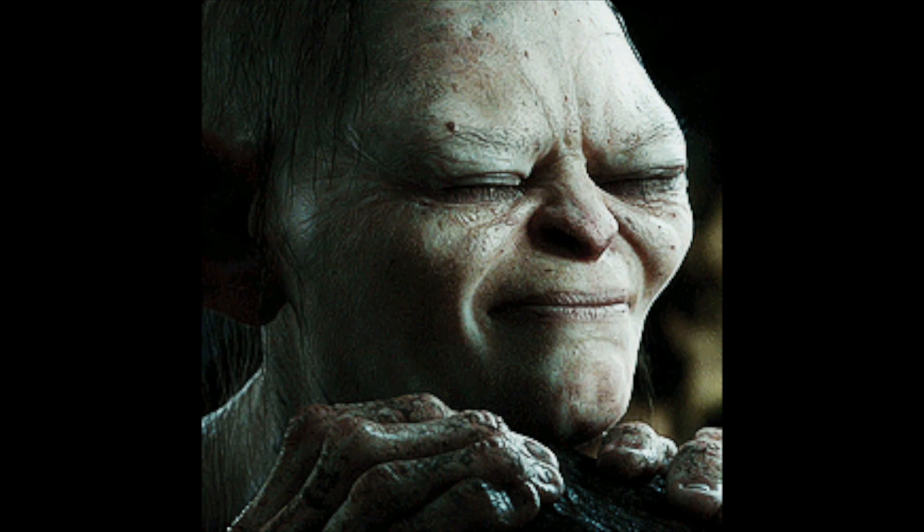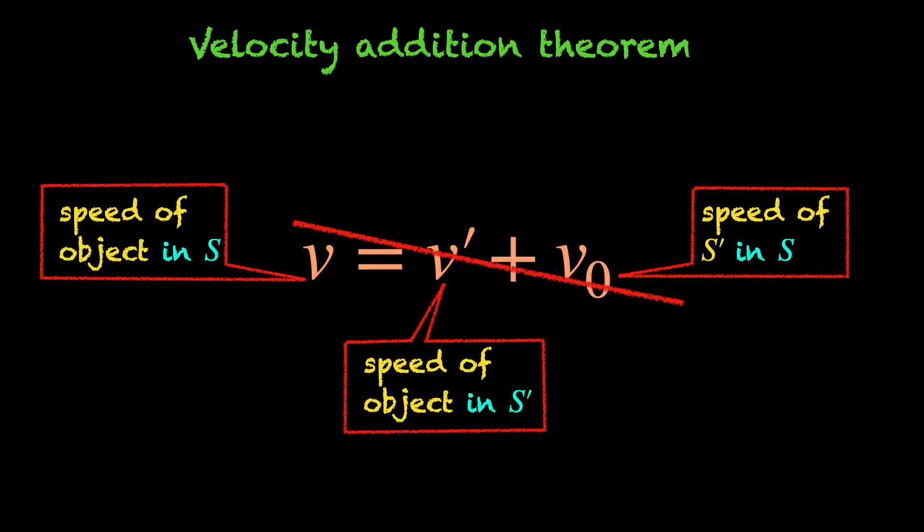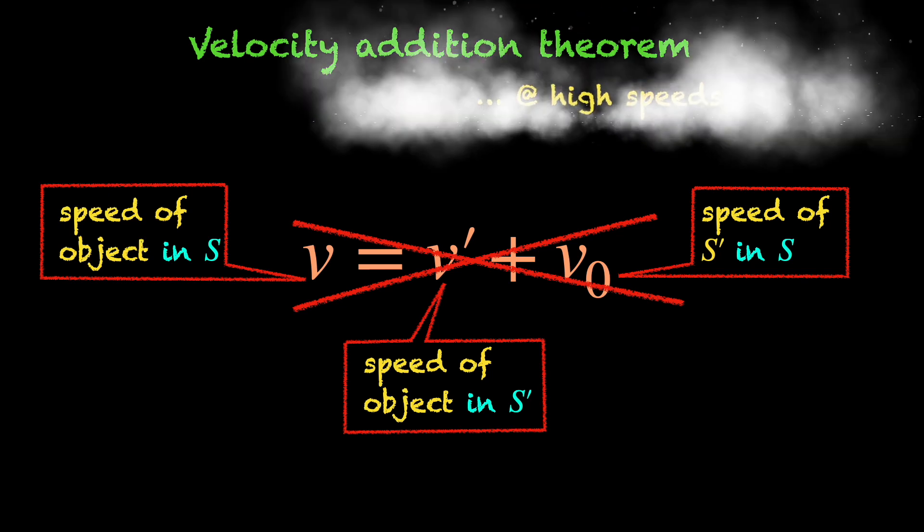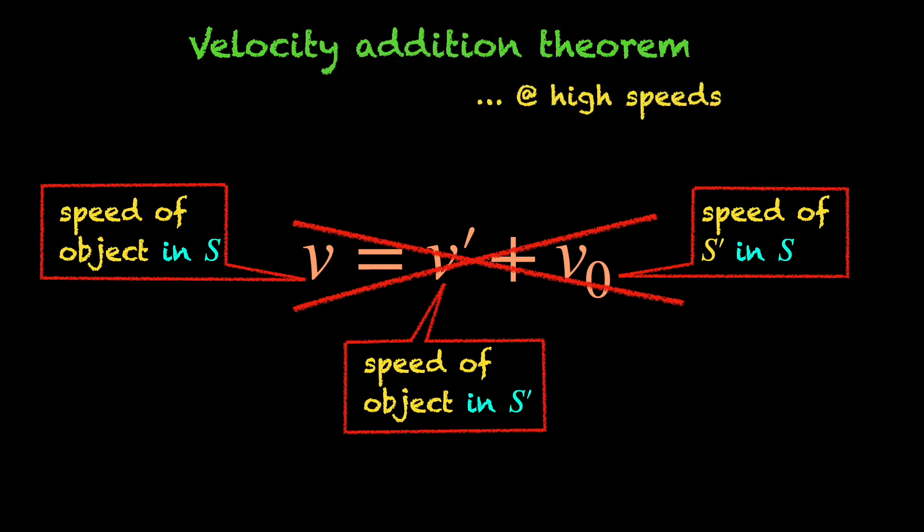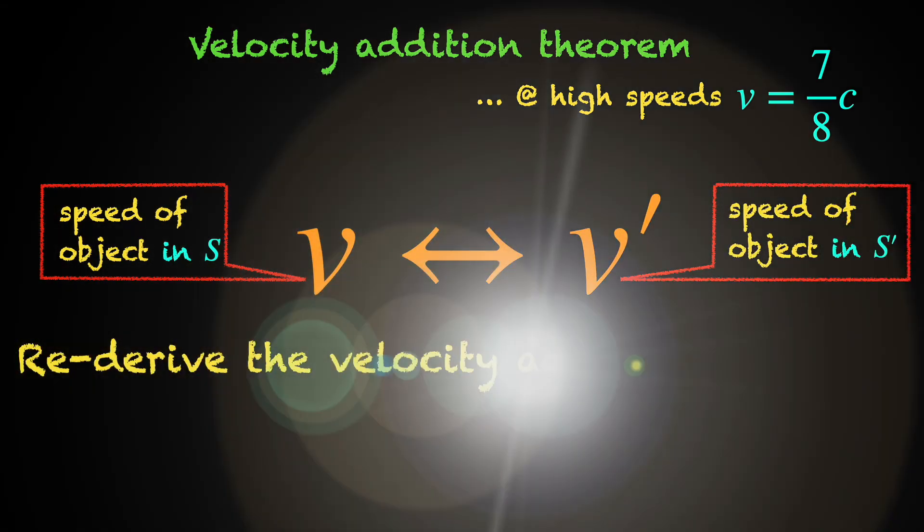It does not work because the velocity addition theorem is no longer a simple addition of velocities when we are talking about high enough velocities, as high as half or 3 fourth the speed of light and so on. In that scenario, we need to reassess how V and V' relate to each other.